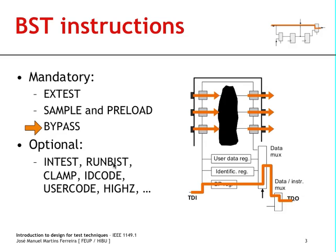From the optional instructions I will just refer to run BIST and ID code. Run BIST is the run built-in self-test optional instruction and it may be supported in the case of very complex devices where it is important to support built-in self-test functions. The identification code, when supported, places an identification register in the data path, enabling the test engineer to scan out a 32-bit pattern identifying the device, its manufacturer, and additional information.